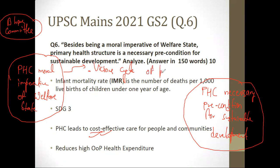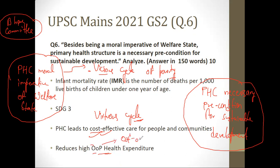A vicious cycle has a negative connotation, while a virtuous cycle has a positive one. In the absence of proper primary health care, a vicious cycle of poverty is created due to high out-of-pocket health expenditure. Millions of people in India go below the poverty line because of high out-of-pocket expenditure. If you have a proper PHC, this out-of-pocket expenditure will reduce.